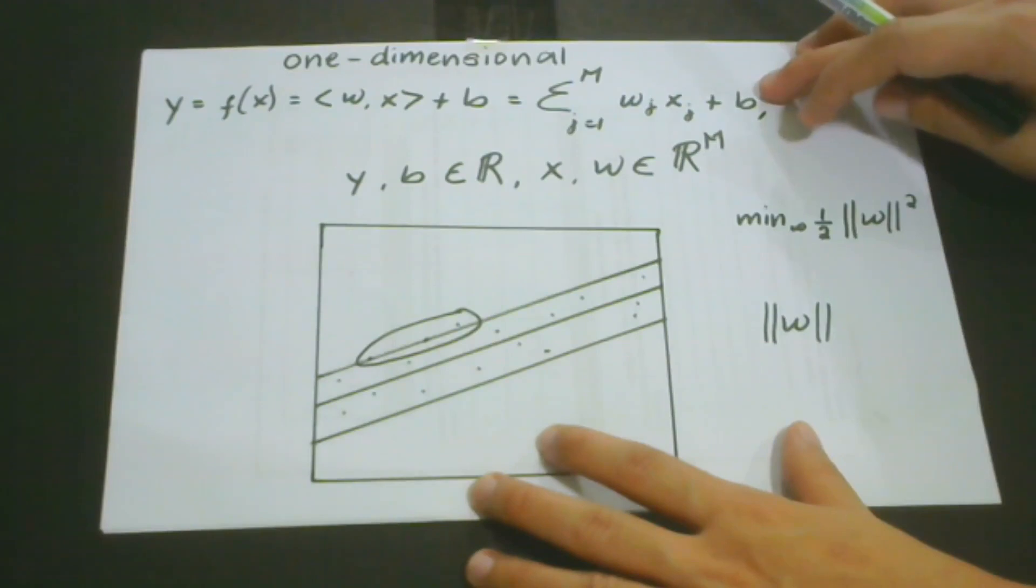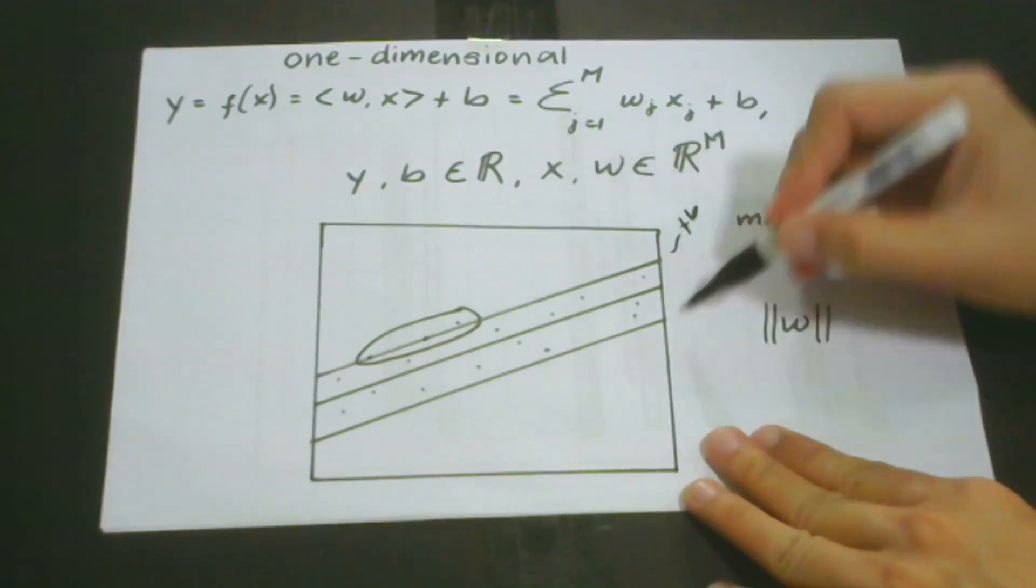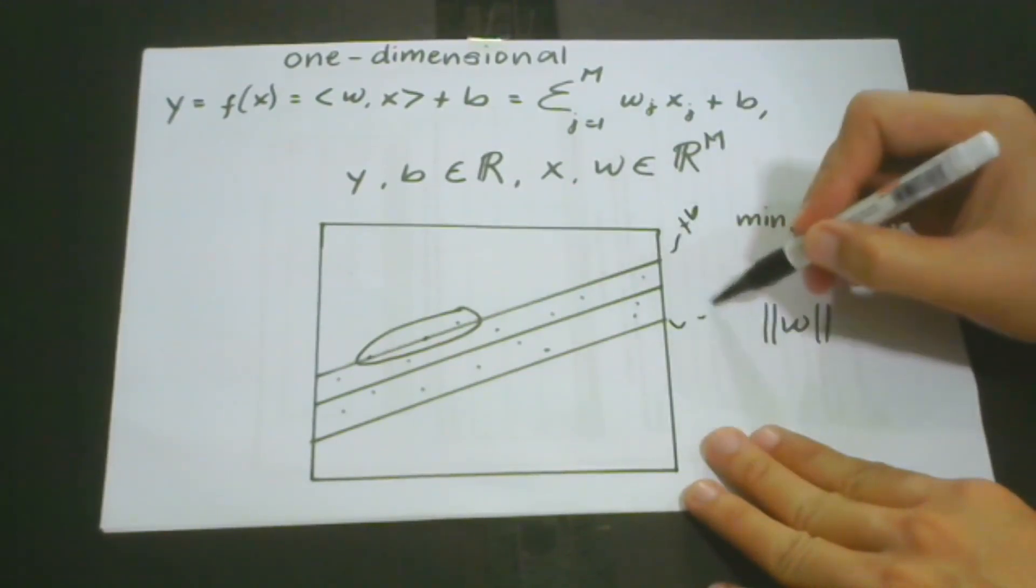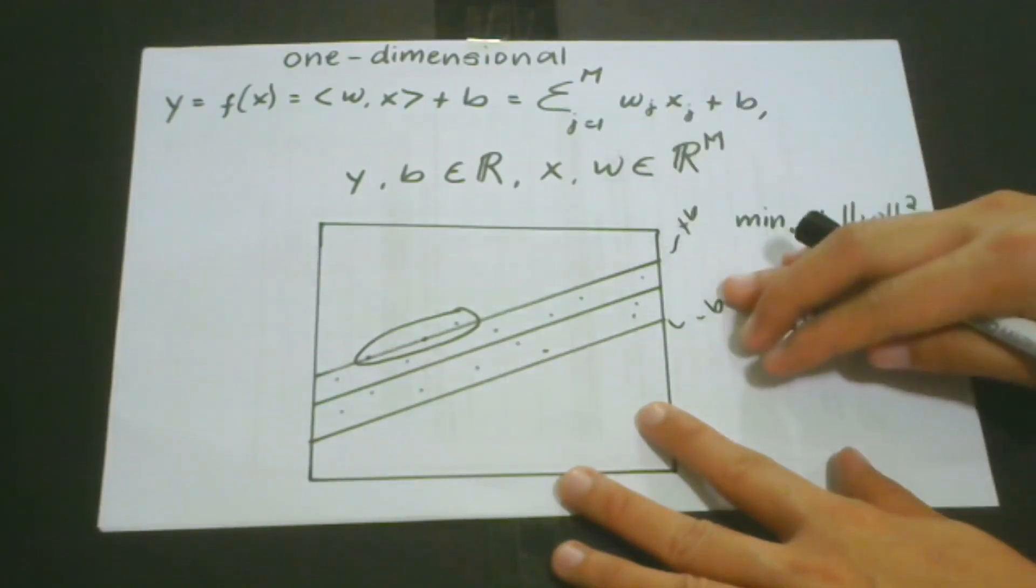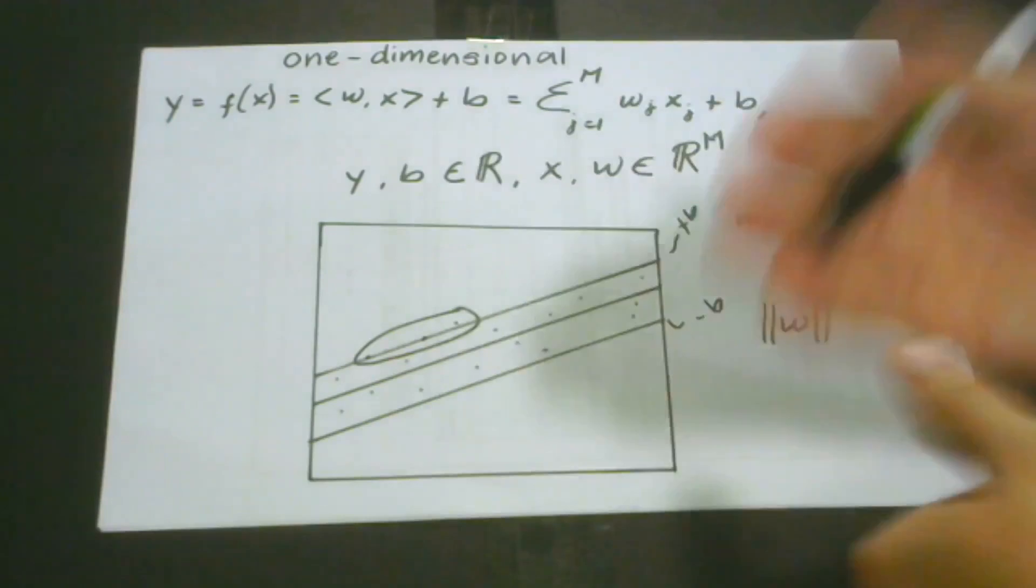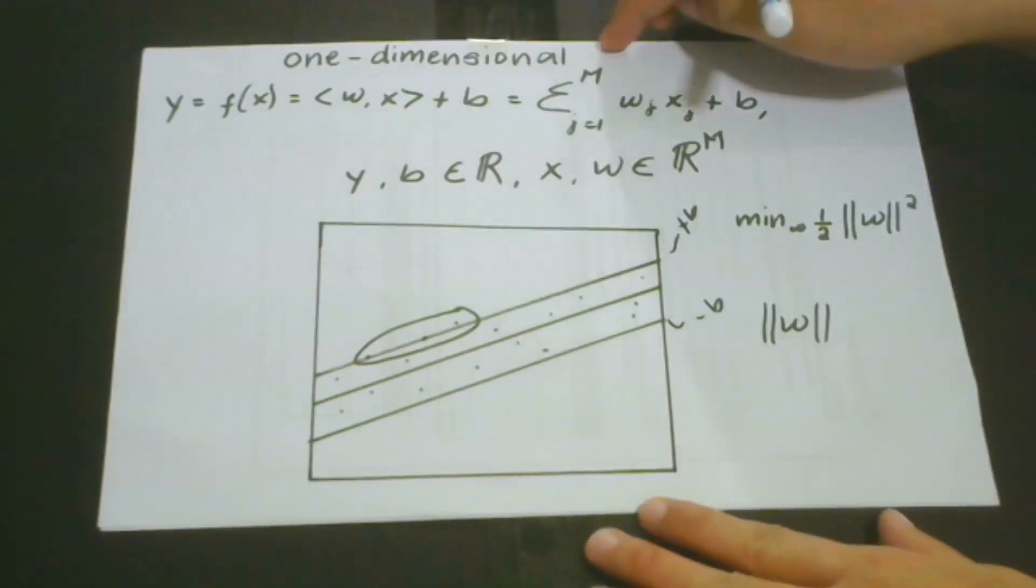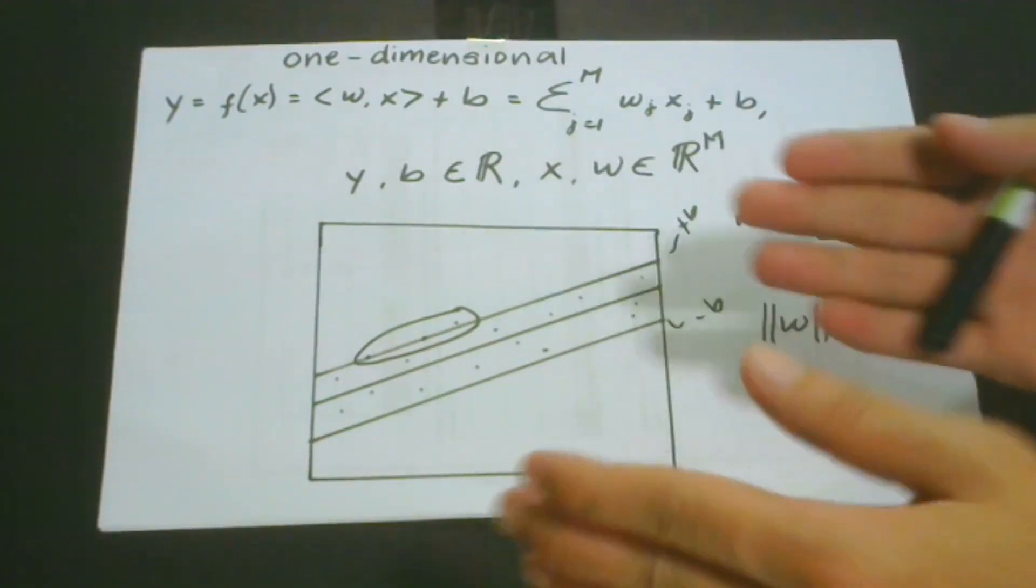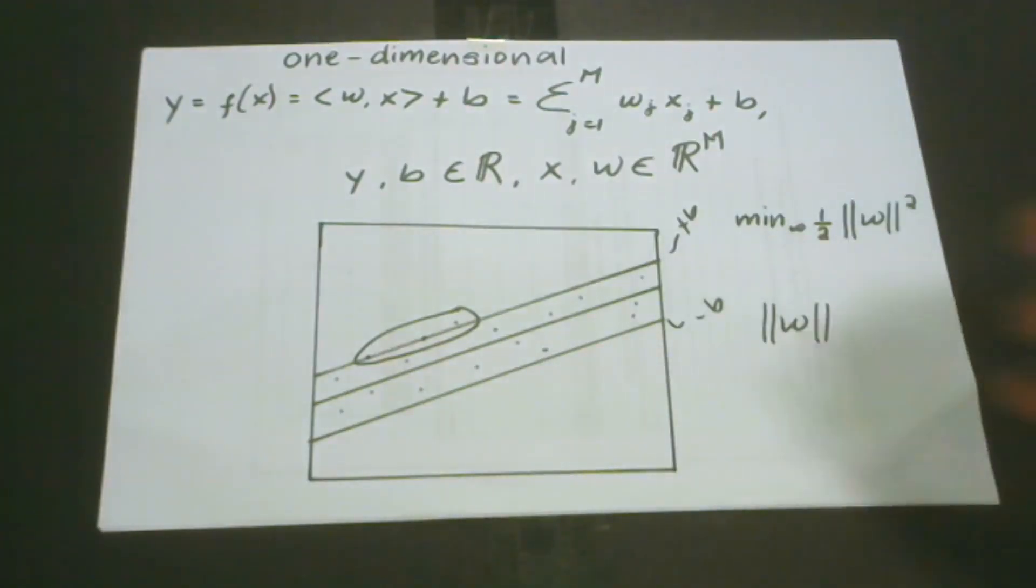In support vector regression, b can be either minus or plus, which means this part here can be plus b and this part here can be minus b. This refers to the upper and the lower hyperplane we have for our tube. As we go along with our discussions, we will understand what I'm talking about. For now, we'll cover one-dimensional and multidimensional perspectives.